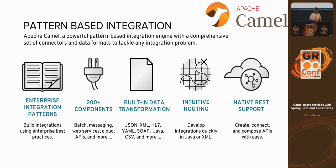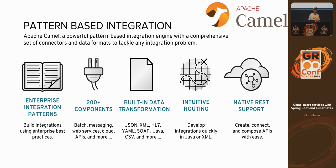Another feature in Camel is data mapping and transformation. You can restructure your messages between XML, Java, JSON, YAML, CSV, flat files, and so on. There's also out-of-the-box support for some industries, in particular healthcare and finance.